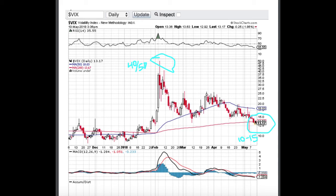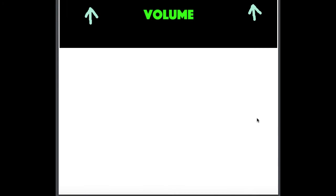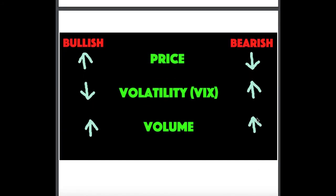We have stock prices recently going higher on lower volatility. Using our simple formula: if we have price action going higher and volatility going lower, it is bullish. Now we're yet to look at another crucial factor, which is volume. So let's take a look and see what are some of the best stocks.